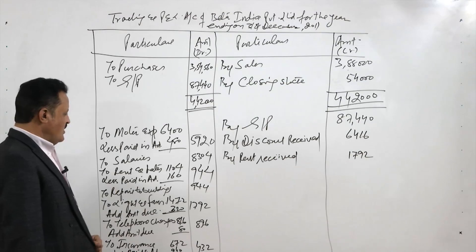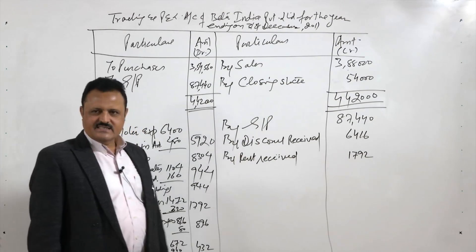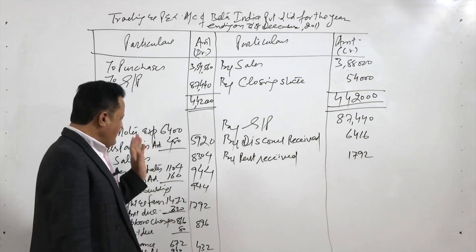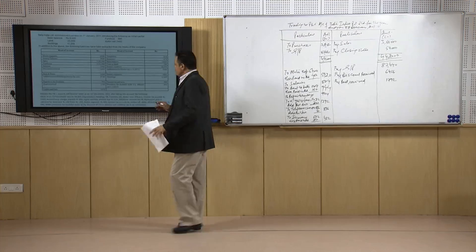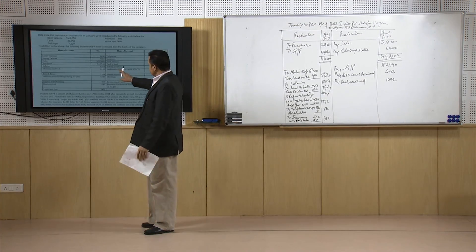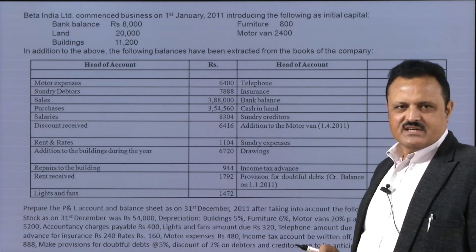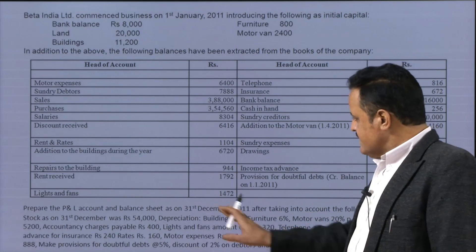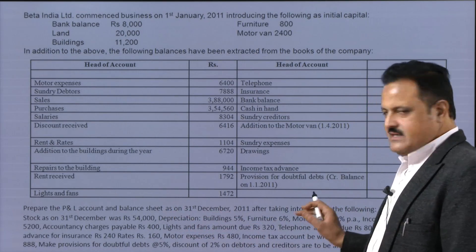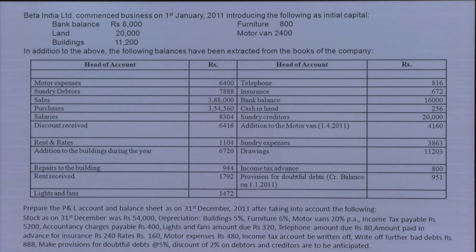We have taken some items here already as expenses and some on this side as incomes. We have some more items to add. One item is left — that is sundry expenses. We have to take this into account and similarly adjust this remaining information as well.